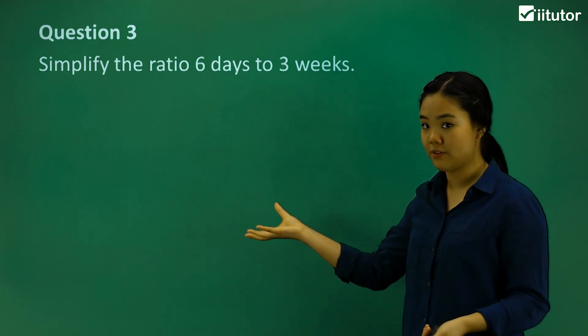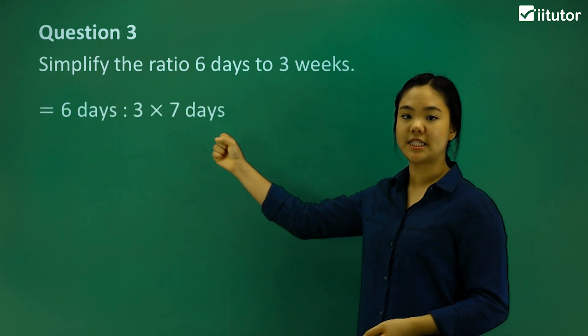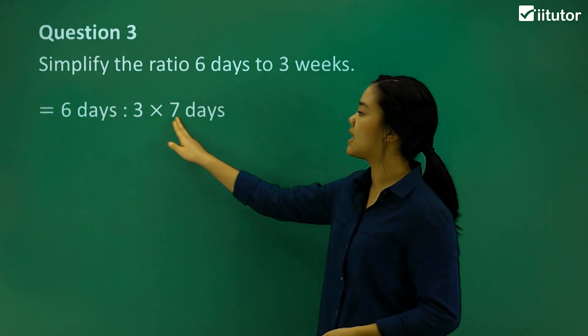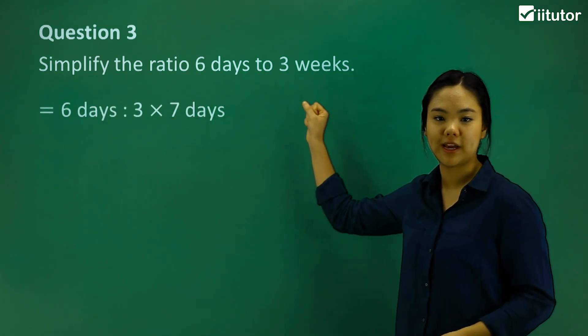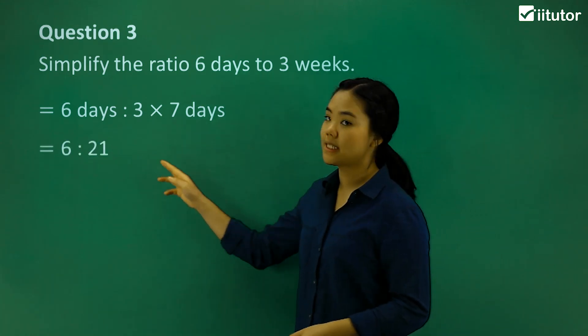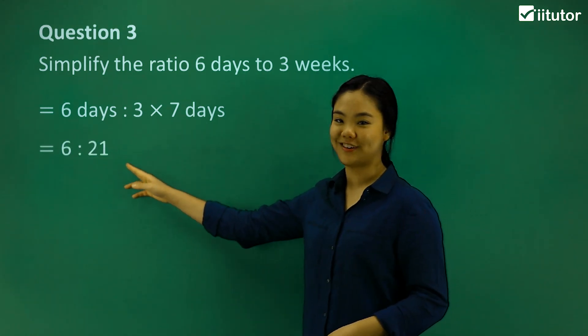So again, whole numbers. We can say 6 days to 3 times 7 days, because that's how many days are in a week. So we can say 6 to 21. That's our simplified ratio.